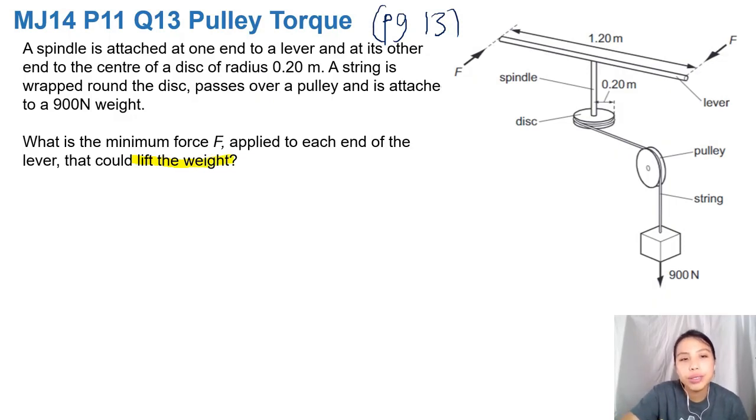Okay, so first thing to note, you read through the question. A spindle is attached to a lever and a disc. So the spindle is basically this on the right side, this yellow bar right there. I colored it yellow for you.